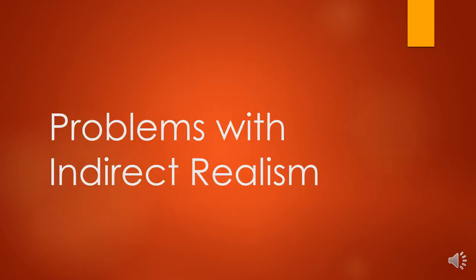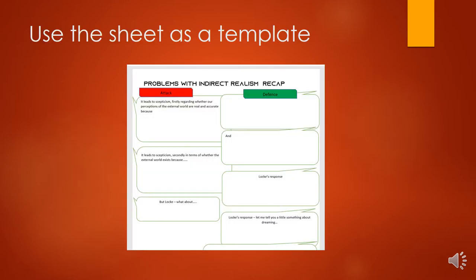Moving on to the problems with indirect realism. One way that you could record notes on this is to go to Teams and have a look at a recap sheet that I've put on. It does help with this really, because what we're going to be looking at is the attacks that Locke has to face and how he argues his case and tries to defend himself. This part of the topic is very much a kind of dialogue or discussion.